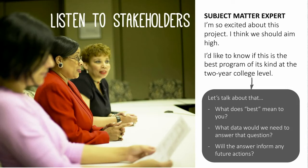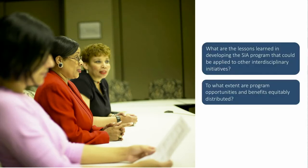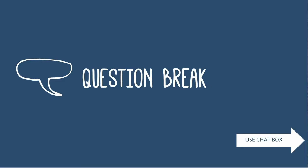We'll take a short break before moving on to the other sources. We now have two evaluation questions generated from stakeholders — lessons learned and equitable distribution — which we'll add to the mix. After the break, we'll talk about sponsor priorities and logic models as sources of evaluation questions.